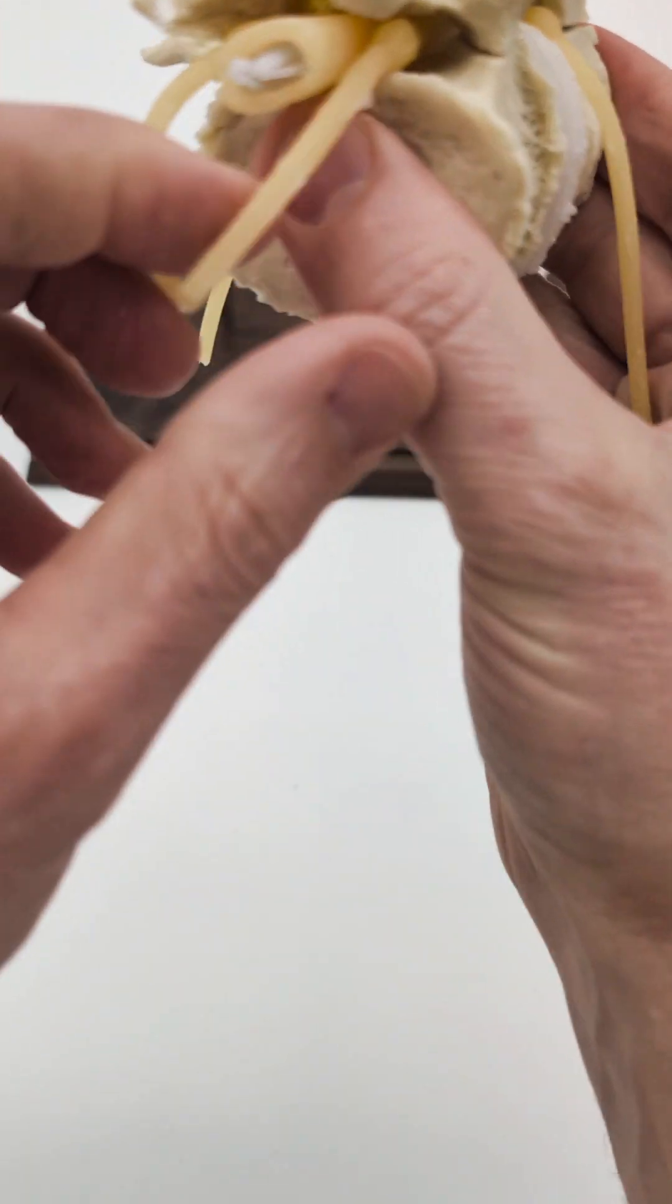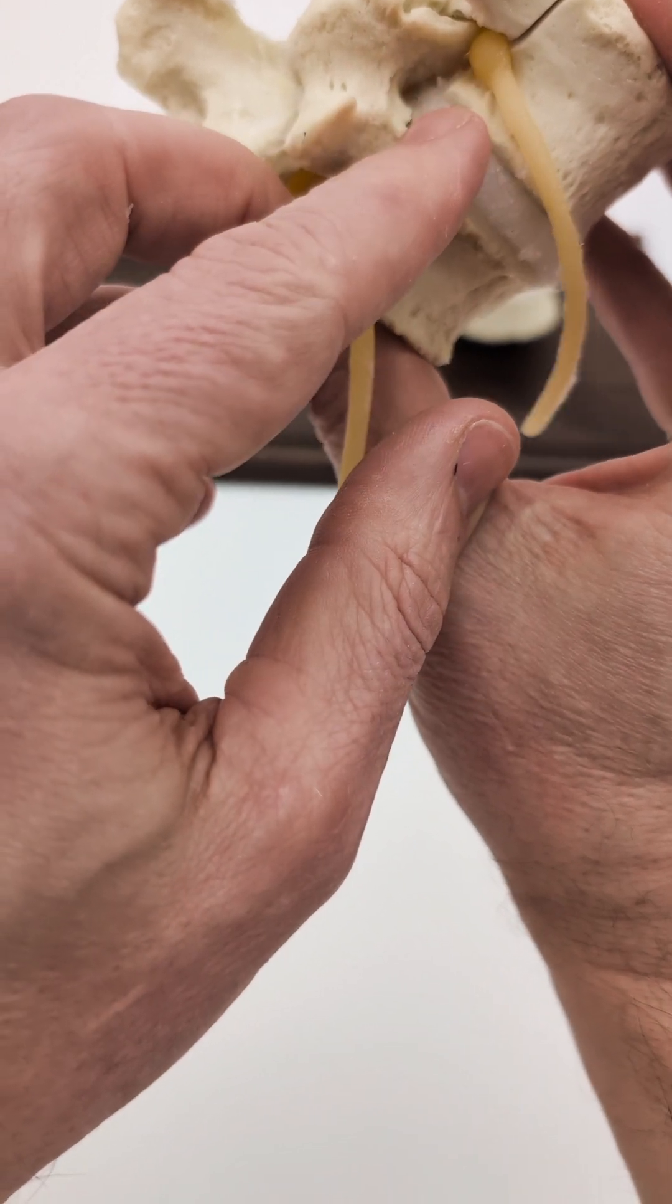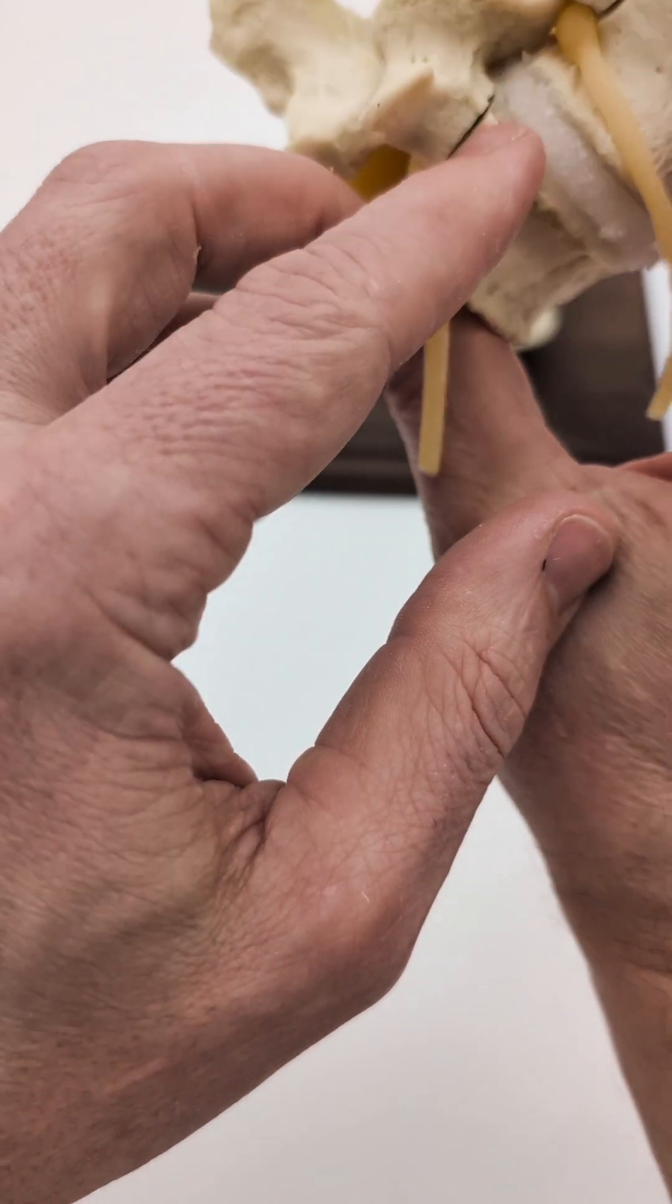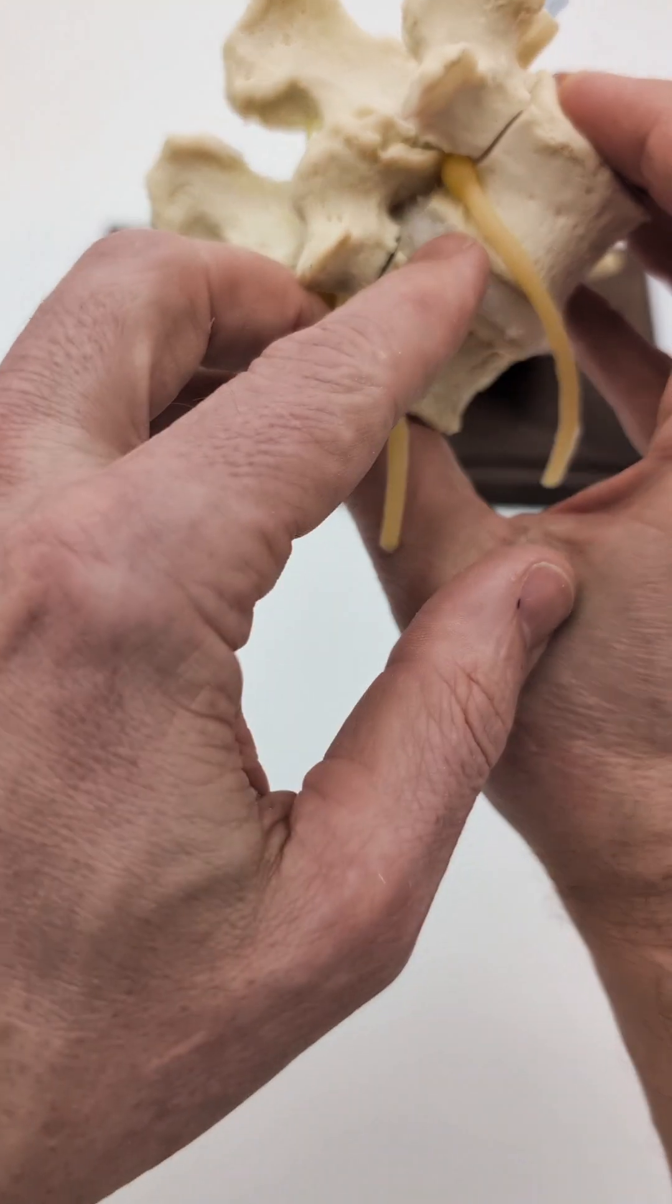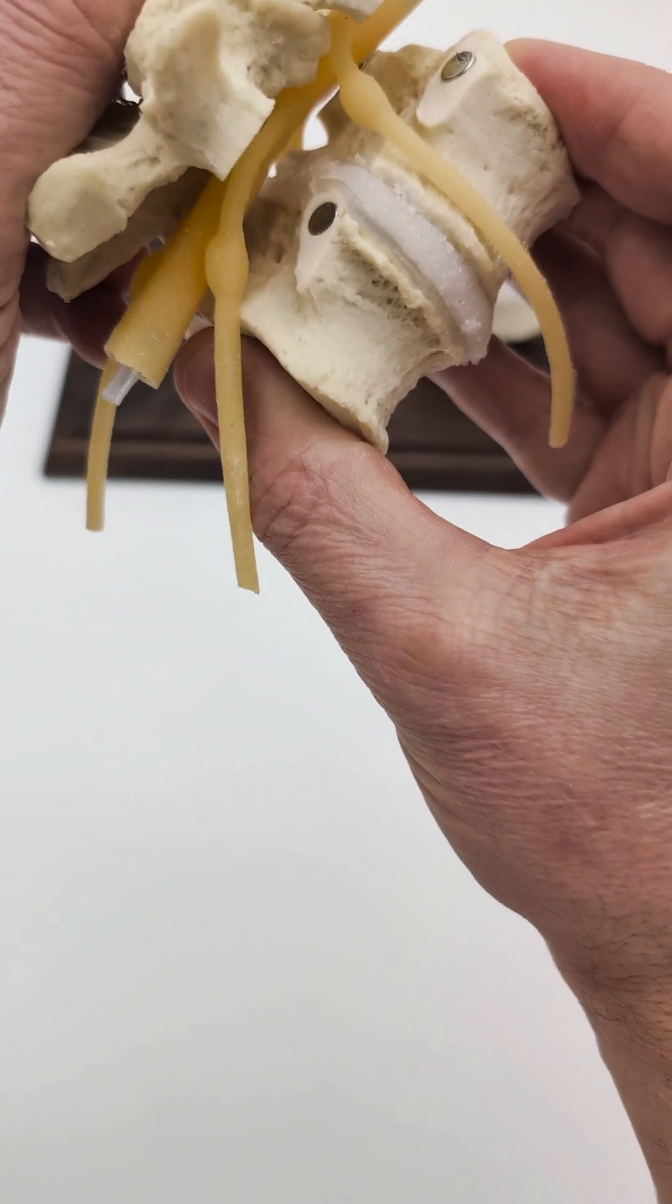And this one here, this L5 nerve root is being affected by the thickened ligamentum flavum and the disc bulge at this lower level.